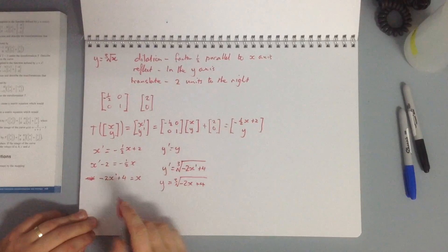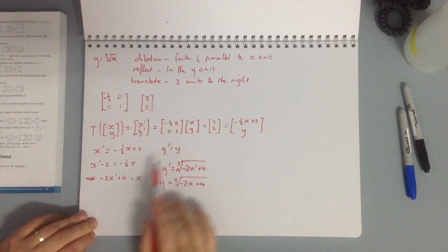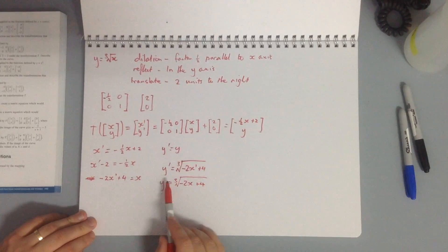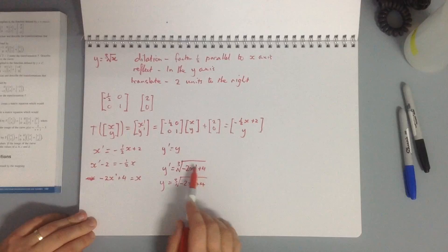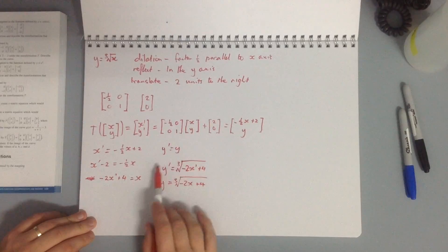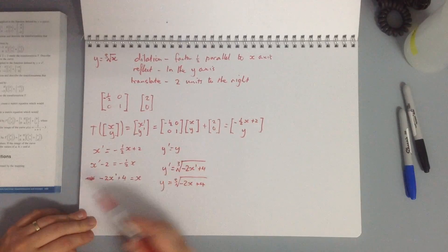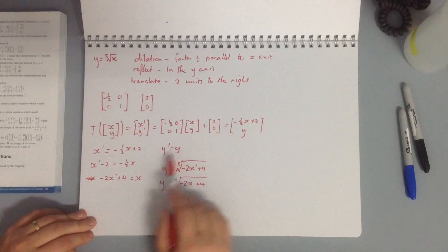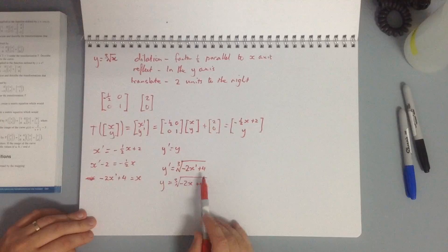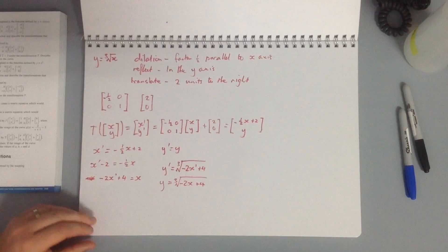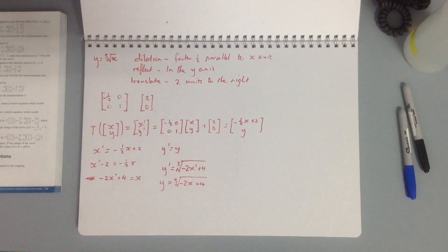Basically, once you've got x and y by themselves after multiplying through the matrix, when substituting in you can skip the intermediate step — just ignore the dashes when you sub in your values. Hopefully that's enough to get you through the questions on this topic.